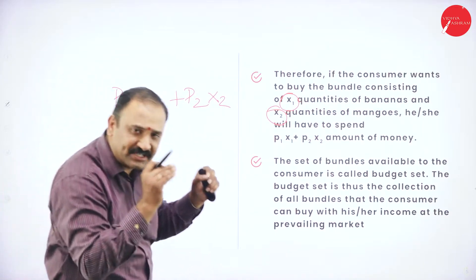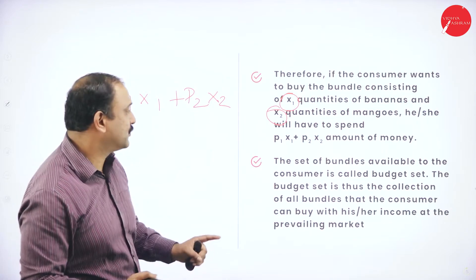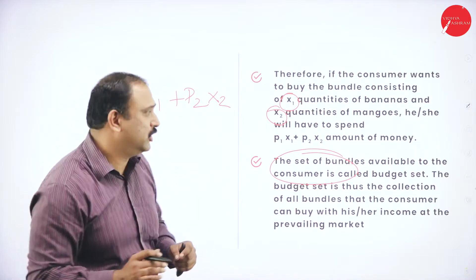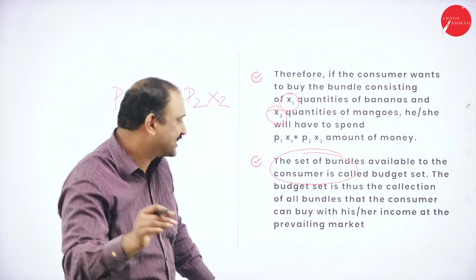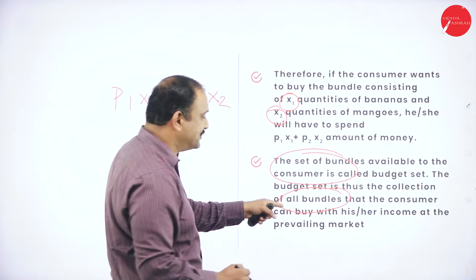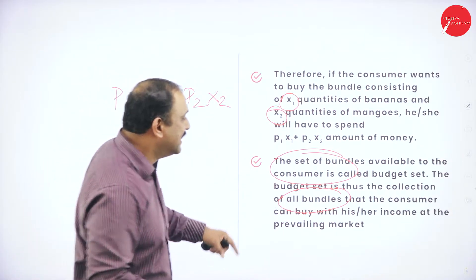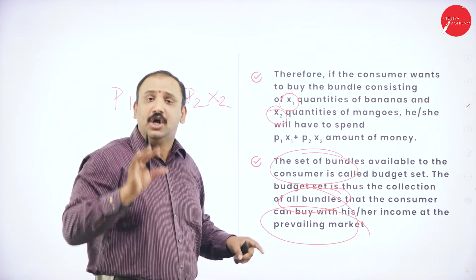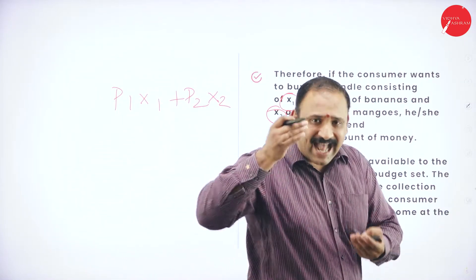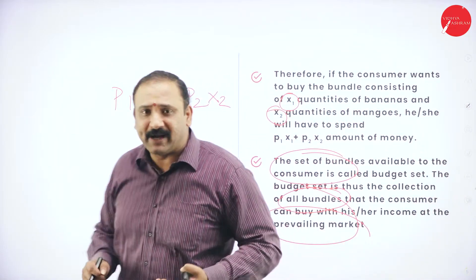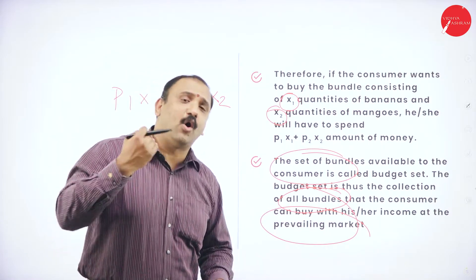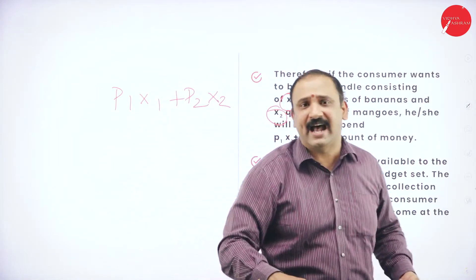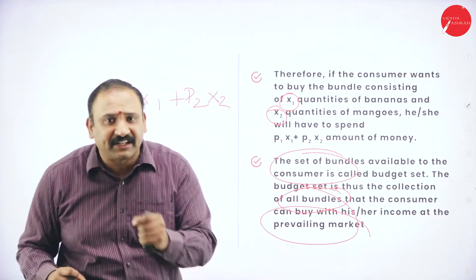These sets of bundles available to a consumer are called the budget set altogether. The budget set is a collection of all bundles that the consumer can buy with his or her income at the prevailing market price. The budget set represents only what is available at that price level — you cannot go outside the market description. With the income the consumer has, purchases are made within that range only.